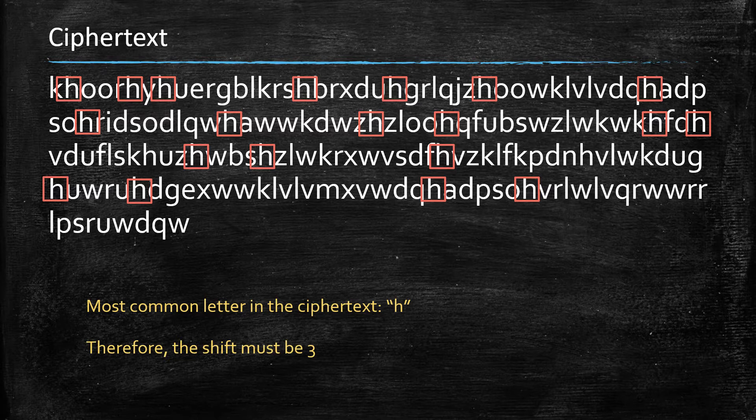So you conclude that H has to be the image of E under that secret shift. And that means that the shift must be three, and that gives you the secret key.